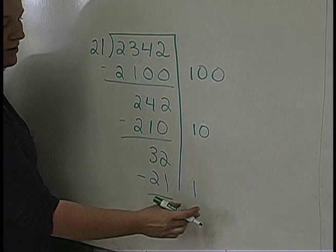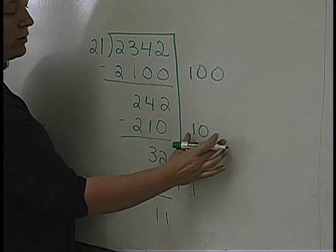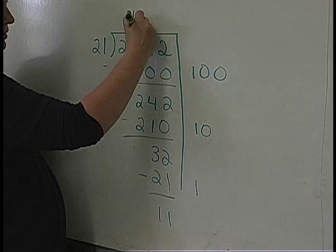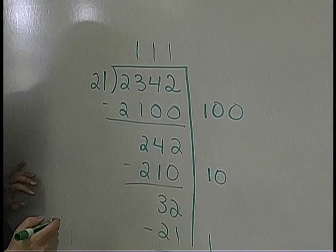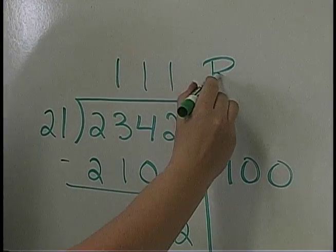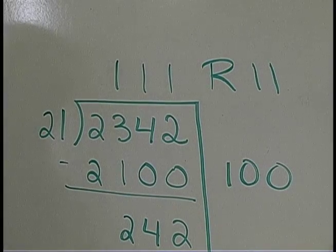So they'll look and say, 'If I look at all these partial quotients - 100 plus 10 plus 1 - that's 111.' And they're left with a remainder of 11.